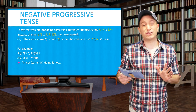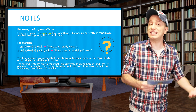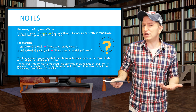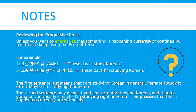Before we go, a quick note about the progressive tense. Unless you want to emphasize that you're currently or continually doing something, feel free to just keep using the present tense as usual. For example, 요즘 한국어를 공부해요 means 'These days I study Korean,' while 요즘 한국어를 공부하고 있어요 means 'These days I am studying Korean.' The first sentence means I'm studying Korean in general — perhaps I study it often, maybe I'm studying it right now too. The second sentence can only mean I am currently studying Korean and that it's going on continually. The progressive tense emphasizes that this is currently or continually happening.